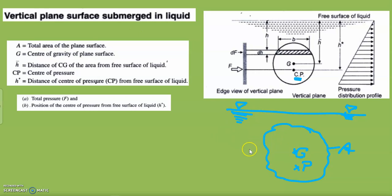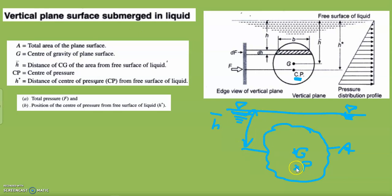We define h-bar as the distance from the free surface to the center of gravity. The distance from the free surface to the center of pressure is marked as h-star. So h-bar is the depth of the center of gravity, and h-star is the depth of the center of pressure.